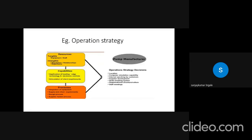Example of operation strategies are, as we see, there is pump manufacturing as an example. There first is resources. Tangible: equipment and staff. And intangible is reputation, relationships, and experience. Capabilities. Applications of leading edge technologies and electronic controls. Activations of client requirements. Process. Integration of equipment, supplies, and client requirements. Design process and supply liaison process.